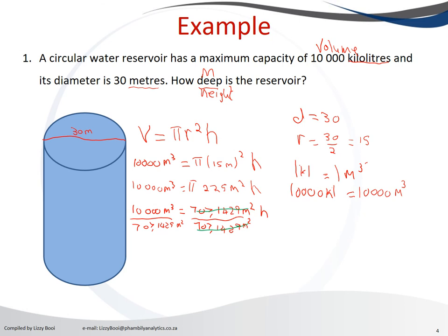This cancels out with that, and we are left with h on the other side. On this side when we divide the meter squared and meter cube, we're left with meters, and 707 goes how many times into 10,000.